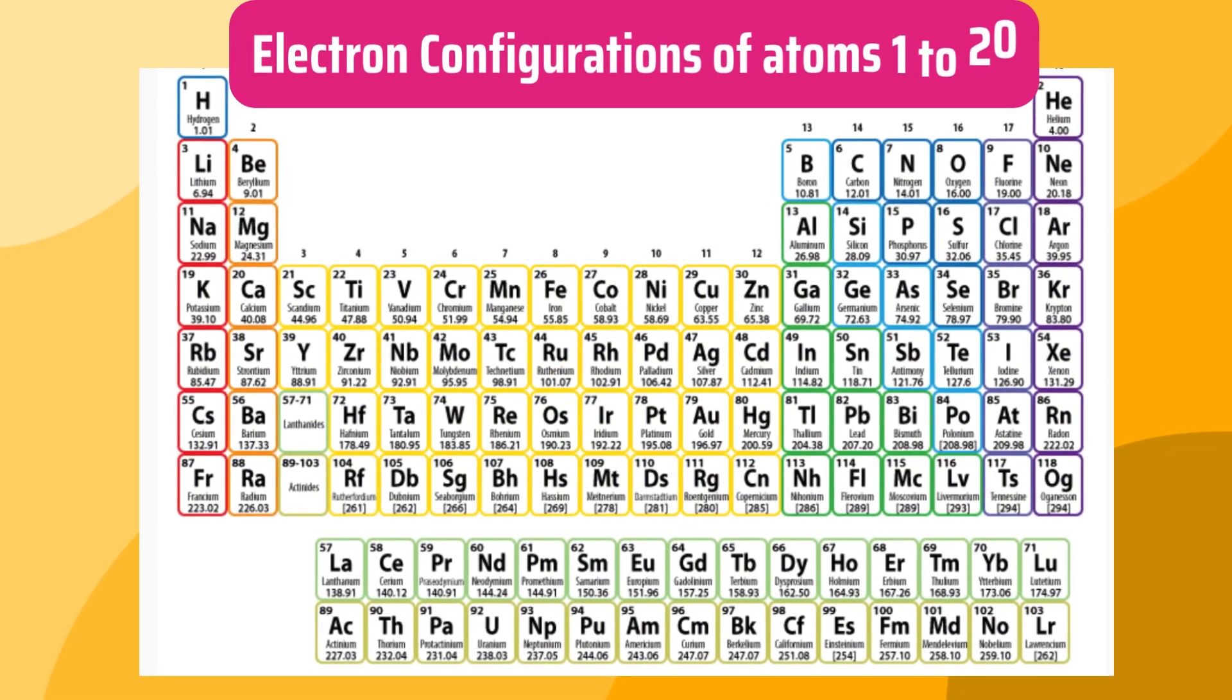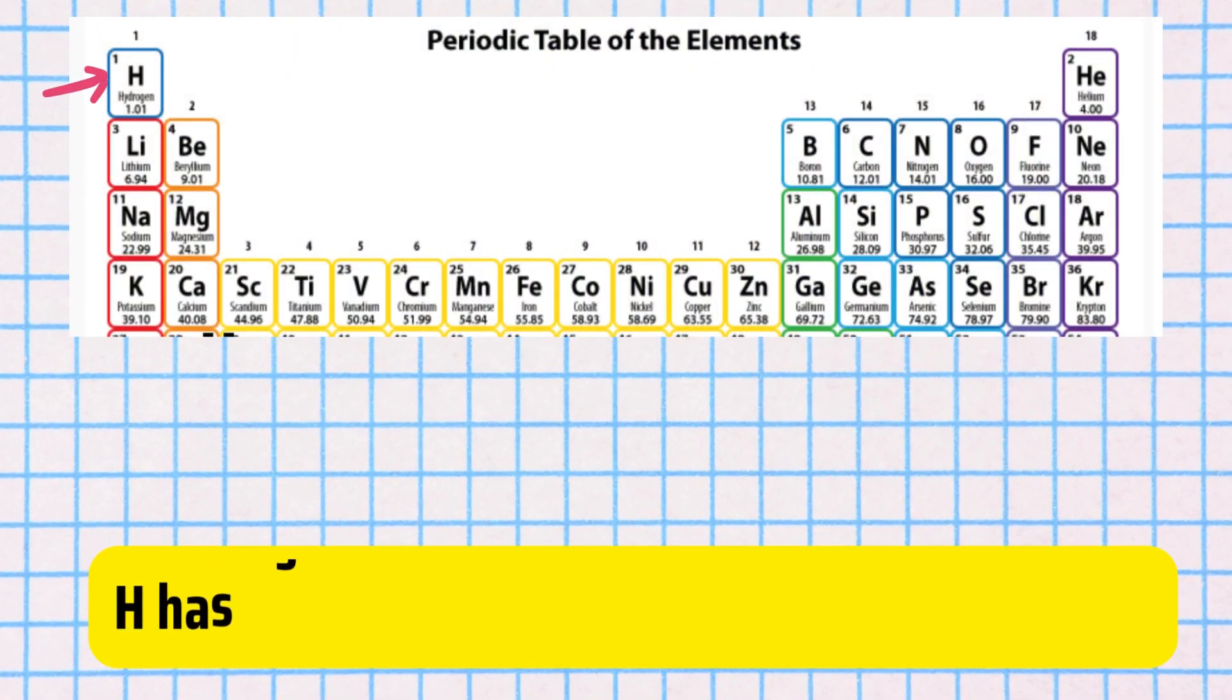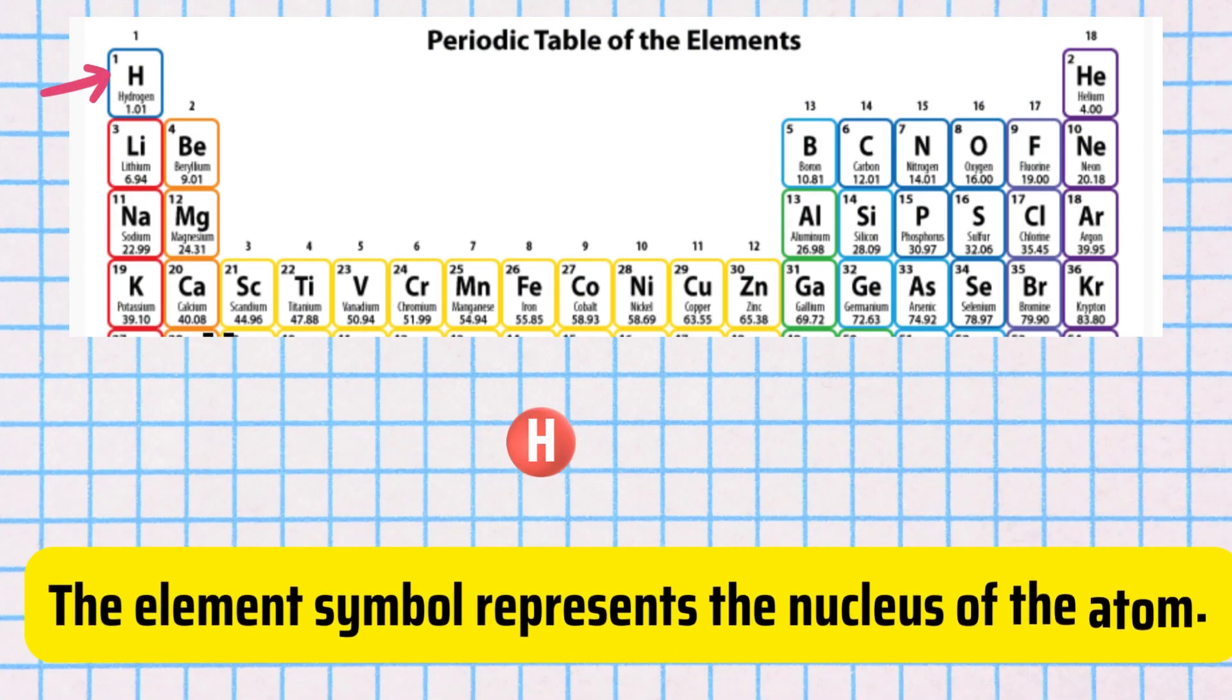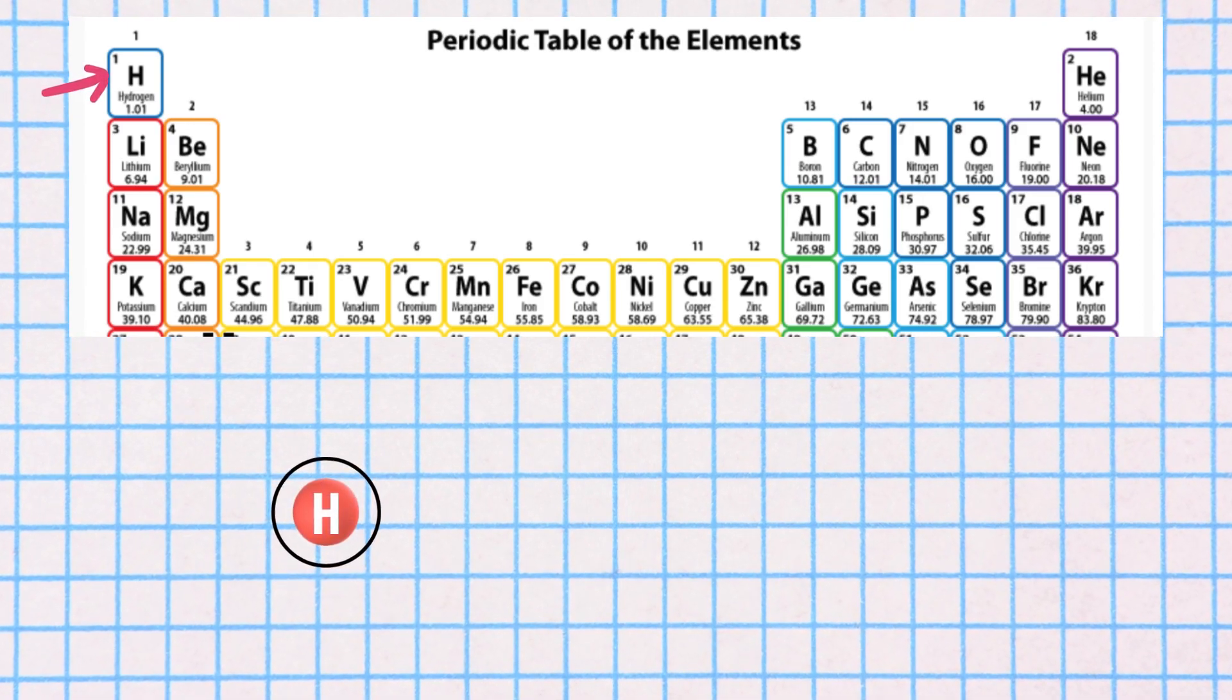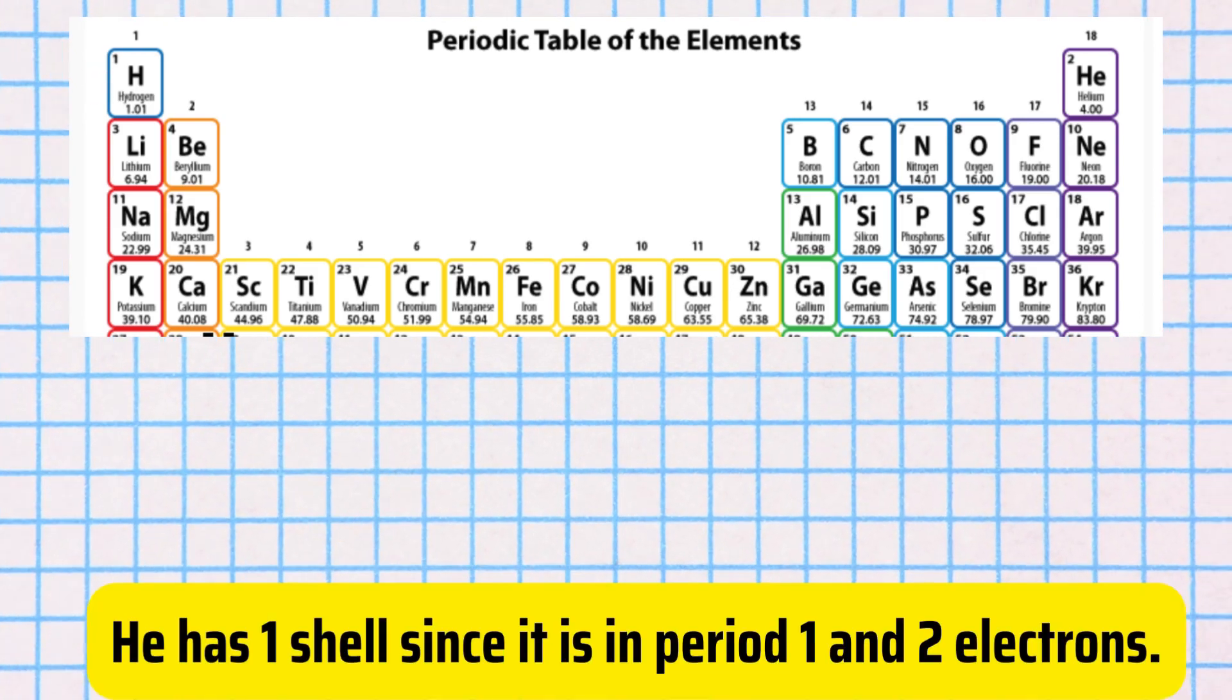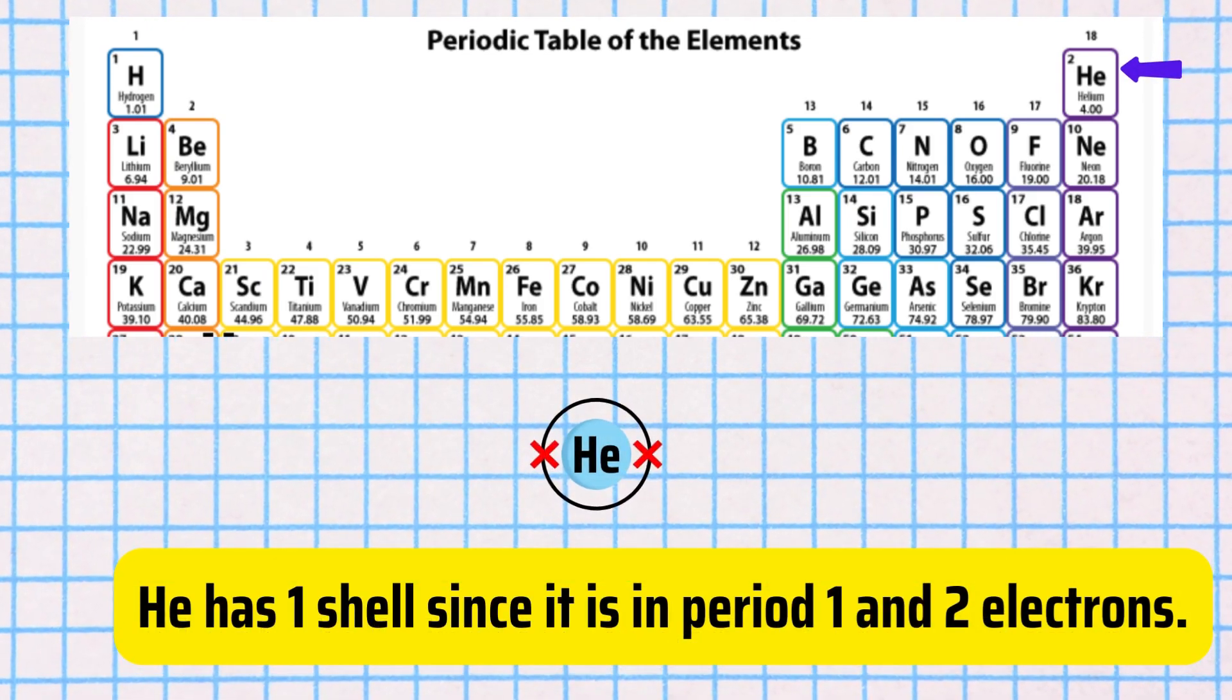Electron configurations of atoms 1 to 20. Hydrogen has one shell since it is in period 1 and it has one electron. The element symbol represents the nucleus of the atom. Shell 1 is closest to the nucleus and has the lowest energy. Electrons can be shown as crosses or dots. Helium has one shell since it is also in period 1 and it has two electrons.